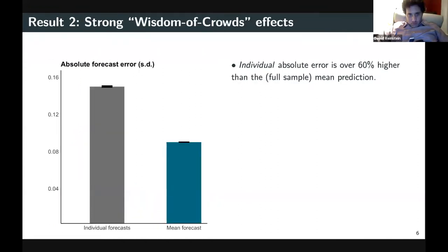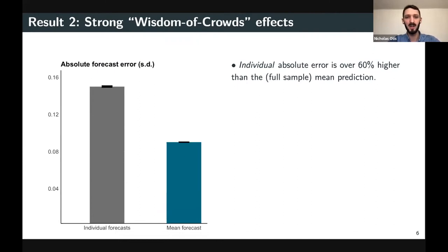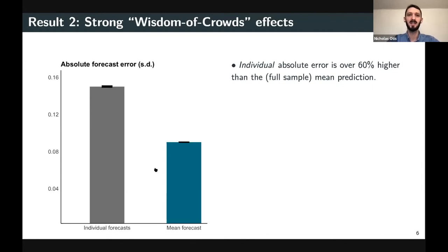This leads to the first result: the mean forecast is actually quite accurate. The absolute error is only 0.09 standard deviations, as depicted in this red vertical line in the histogram of absolute error. Over 50% of the predictions are less than 0.05 standard deviations away from the true experimental effect. So academics are, on average, quite good at predicting the effects of policies.